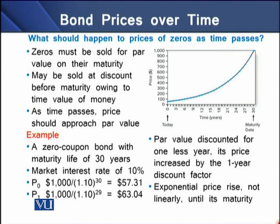To understand this further, consider a zero coupon bond with a 30-year maturity life and a market interest rate of 10%. The current price of the bond is $57.31. After one year — with 29 years remaining — the price of the bond rises to $63.04. The par value is being discounted over one fewer year, so the price increases by one year's discount factor. This price increase is exponential rather than linear, as shown in the graph.